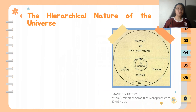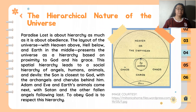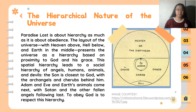The second theme is the hierarchical nature of the universe. Paradise Lost is about hierarchy as much as it is about obedience. The layout of the universe — with heaven above, hell below, and earth in the middle — presents a hierarchy based on proximity to God and His grace. This spatial hierarchy leads to a social hierarchy of angels, humans, animals, and devils. The Son is closest to God, with archangels and cherubs behind him, then Adam and Eve and earth's animals, with Satan and the fallen angels following last. To obey God is to respect this hierarchy.